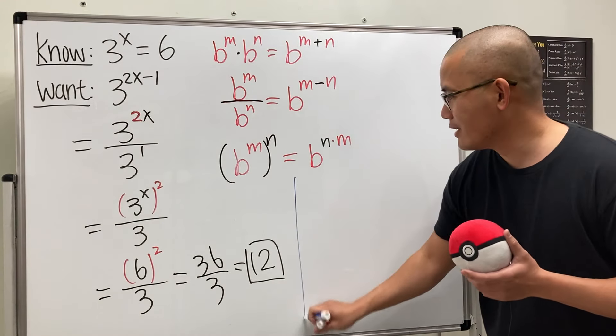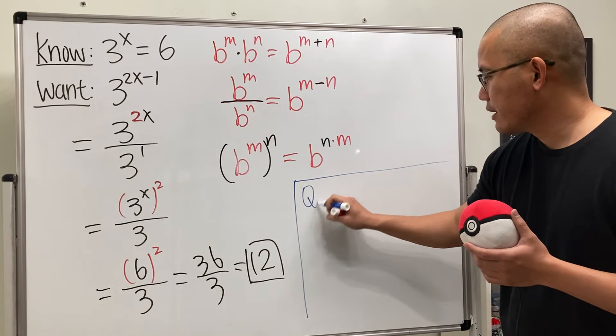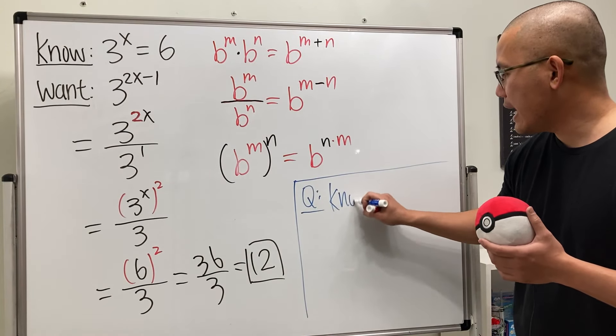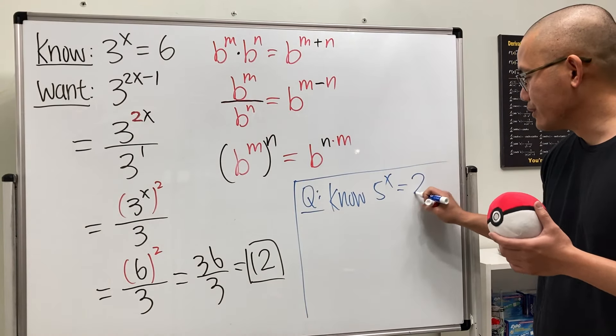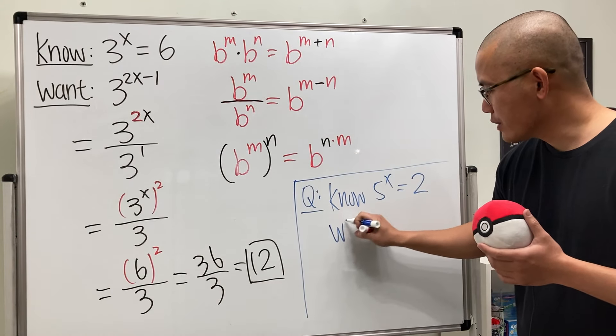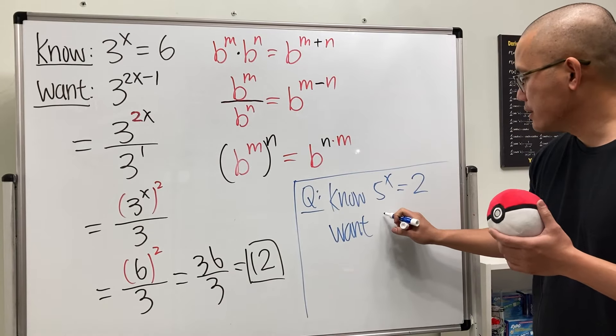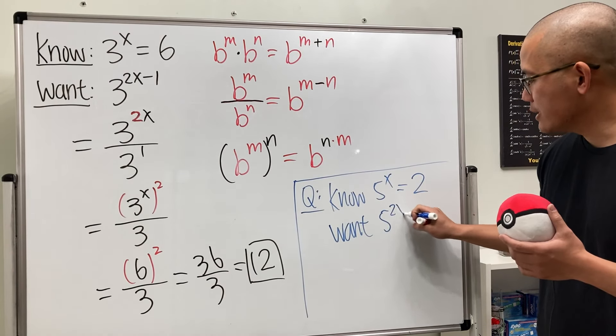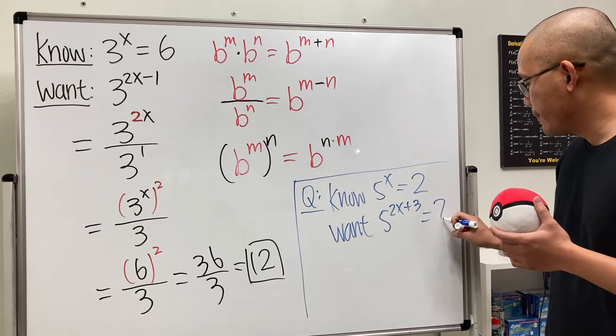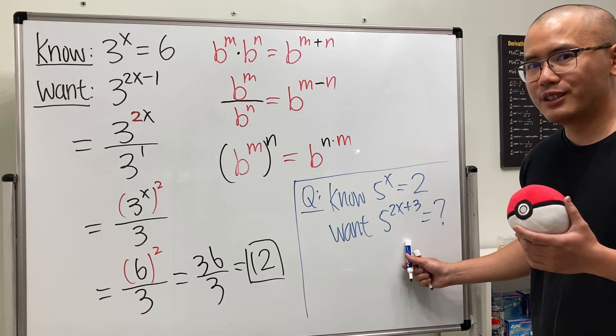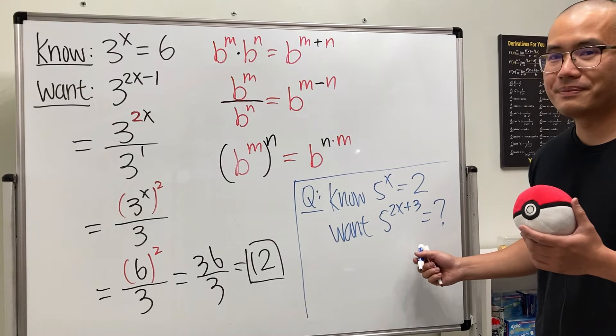And I'll give you guys another question. All right. Here's the question. Suppose we know that 5 to the x power is equal to 2. All right. And the question is, we want to know what's 5 to the 2x power plus 3. All right. So, leave your answer down below and let me know what you guys have. That's it.